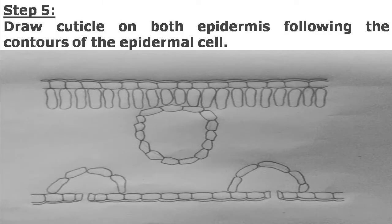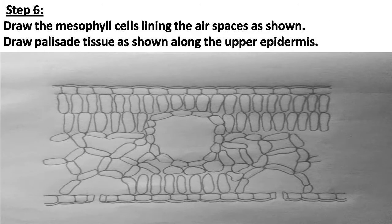Step five: draw the cuticle. Add the stomatal opening and stomatal cavity. Arrange the cells in small boxes for the epidermal layer. After the epidermal layer, draw the mesophyll tissue. In the mesophyll tissue, first draw the palisade parenchyma using long barrel-shaped cells below the upper epidermis. Put a cuticle layer on the upper epidermis. Step six: draw the spongy parenchyma — the cells are elongated but with a lot of intercellular space. Connect them loosely to show the gaps in the mesophyll tissue.